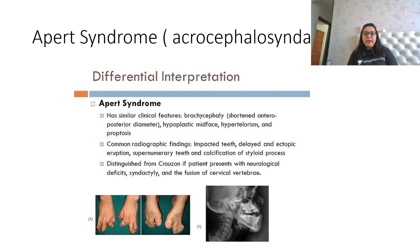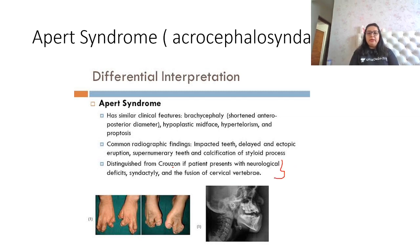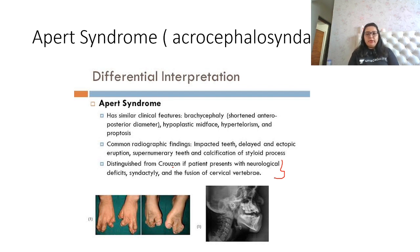Apert syndrome features include brachycephaly with a shortened anteroposterior diameter, hypoplastic midface, hypotelorism, and proptosis. Radiologic findings include impacted teeth, delayed and ectopic eruption with supernumerary teeth, and calcification of the styloid process. Apert syndrome is distinguished from Crouzon syndrome by the presence of neurological deficits, syndactyly, and fusion of cervical vertebrae. Crouzon patients are neurologically and intellectually normal, whereas Apert patients have these additional findings.